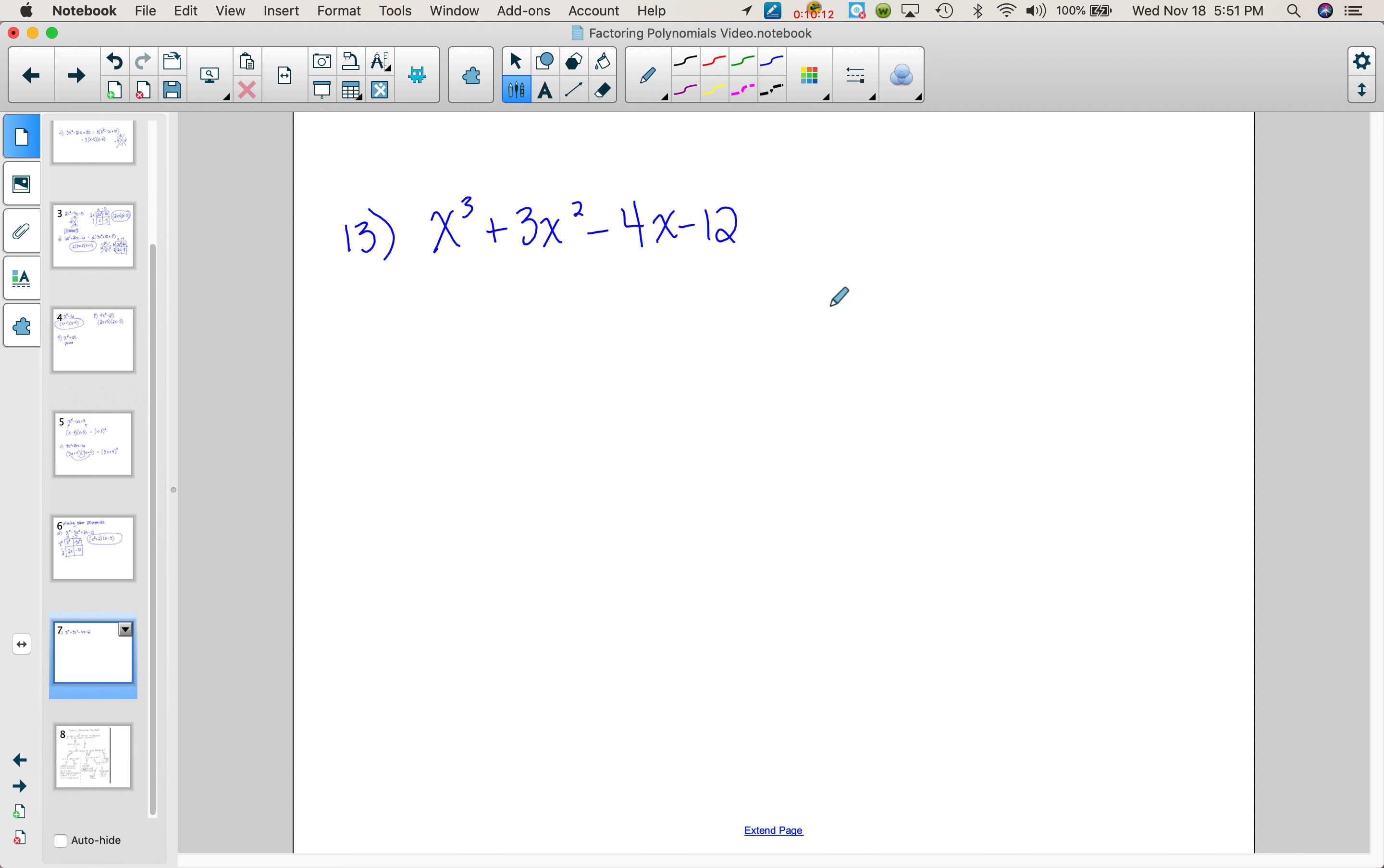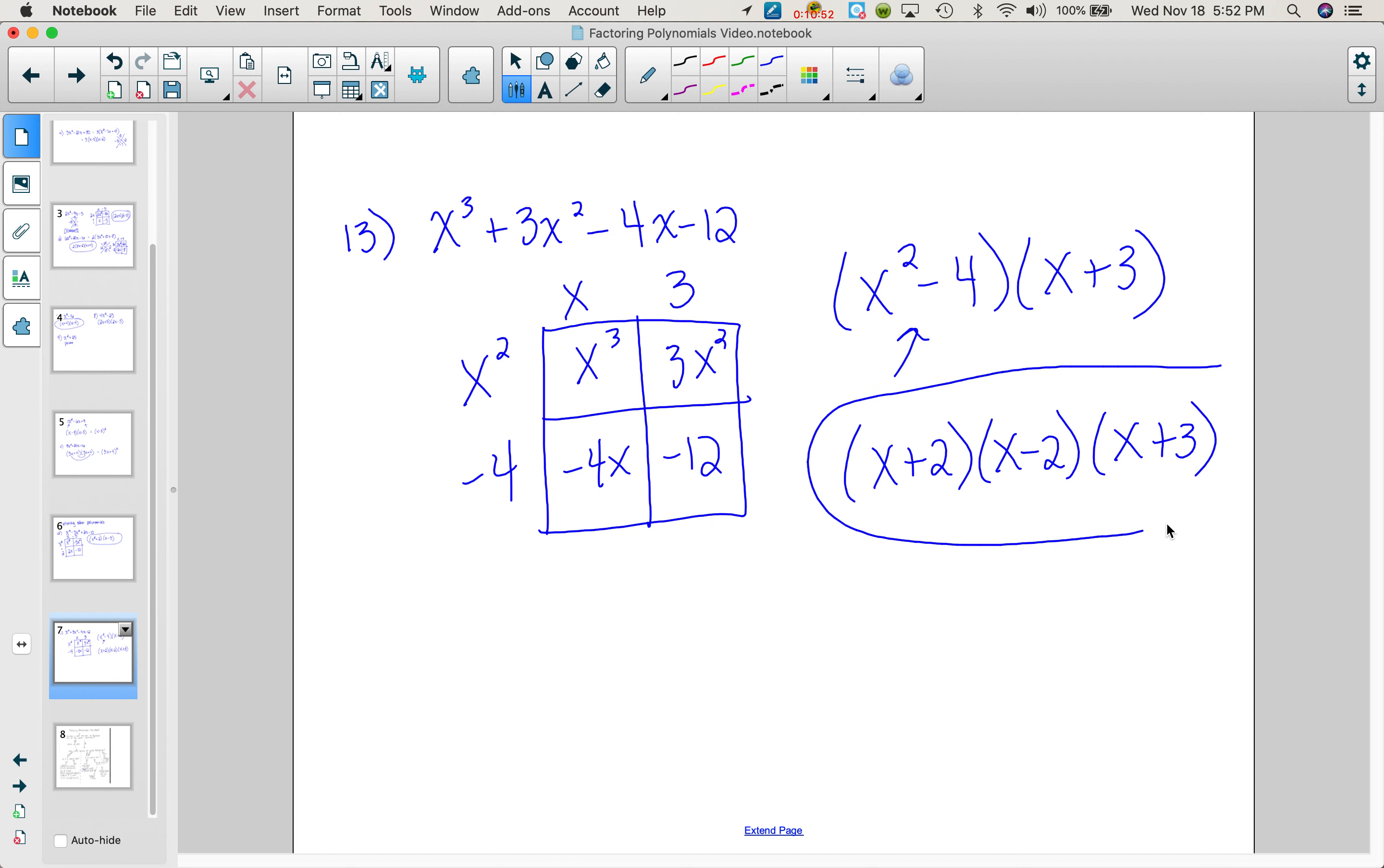Next problem, another one with 4, same strategy. So we have x cubed, 3x squared, minus 4x minus 12. Pull out your common factors, and we get x squared, minus 4 times x plus 3. But wait, we're not done. This is the difference of two squares. So when we factor that, we get x plus 2 times x minus 2 times x plus 3. That is the complete factorization of this problem. Check for things like that.